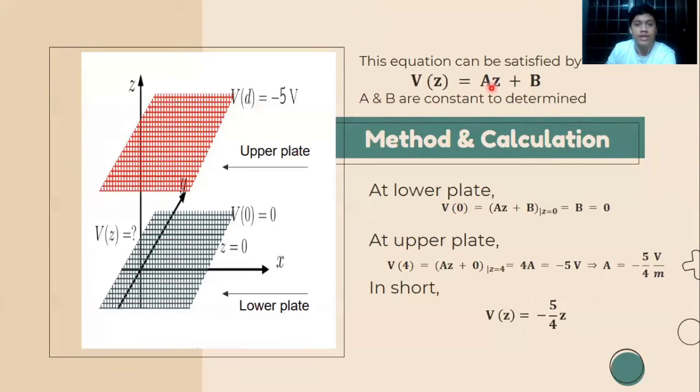To find the value of A, we write the upper plate equation and put the distance value d = 4 into this equation, and we get A = -5/4 volts per meter.